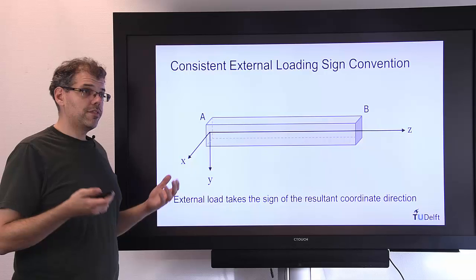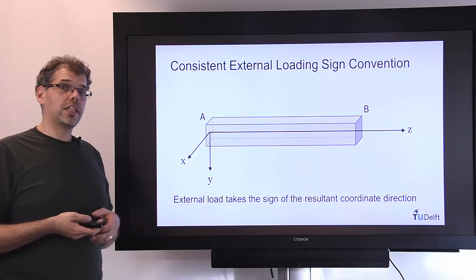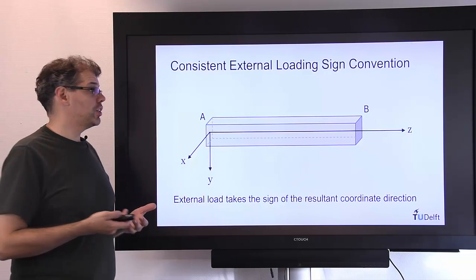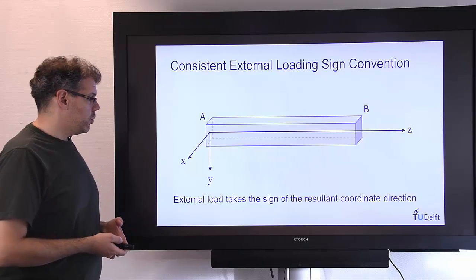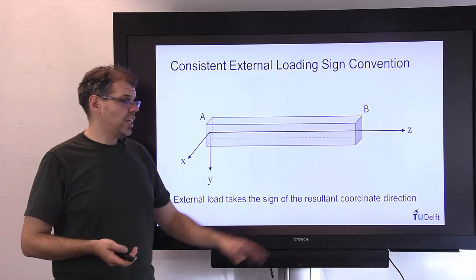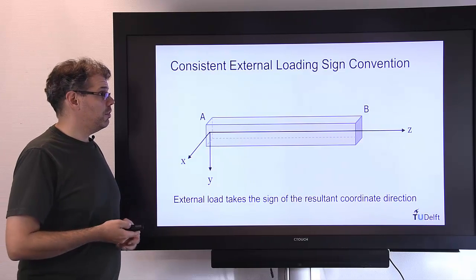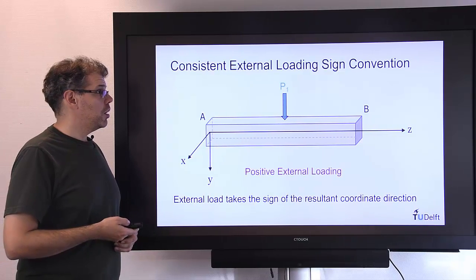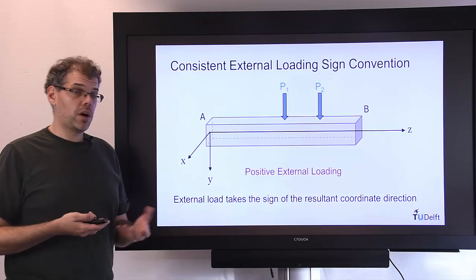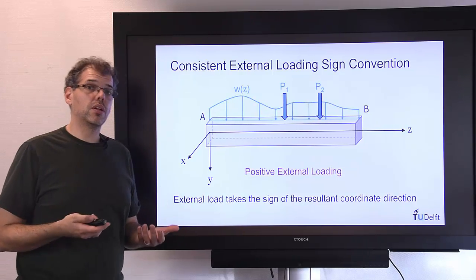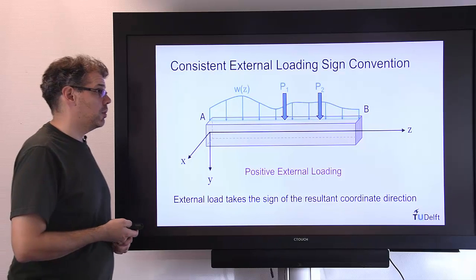If we look at the effect of this coordinate system on the sign convention for external loading, we need to remember that the external load should take the sign of that coordinate system. So positive loading on that beam in terms of point loads should be positive downwards. In terms of distributed loads should also be positive downwards.